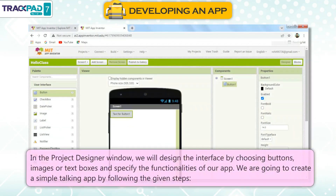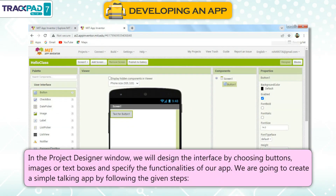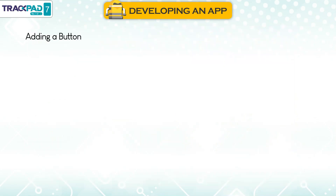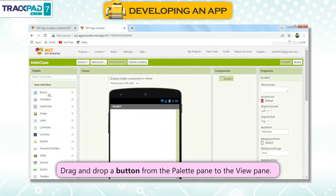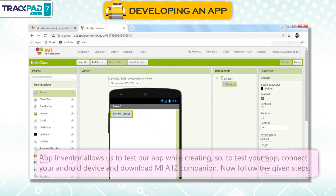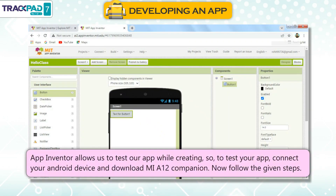Creating a Talking App: In the Project Designer window, we will design the interface by choosing buttons, images, or text boxes and specify the functionalities of our app. We are going to create a simple talking app. Adding a Button: drag and drop a button from the palette pane to the view pane. Testing the App: App Inventor allows us to test our app while creating it. To test your app, connect your Android device and download MIT AI2 Companion.